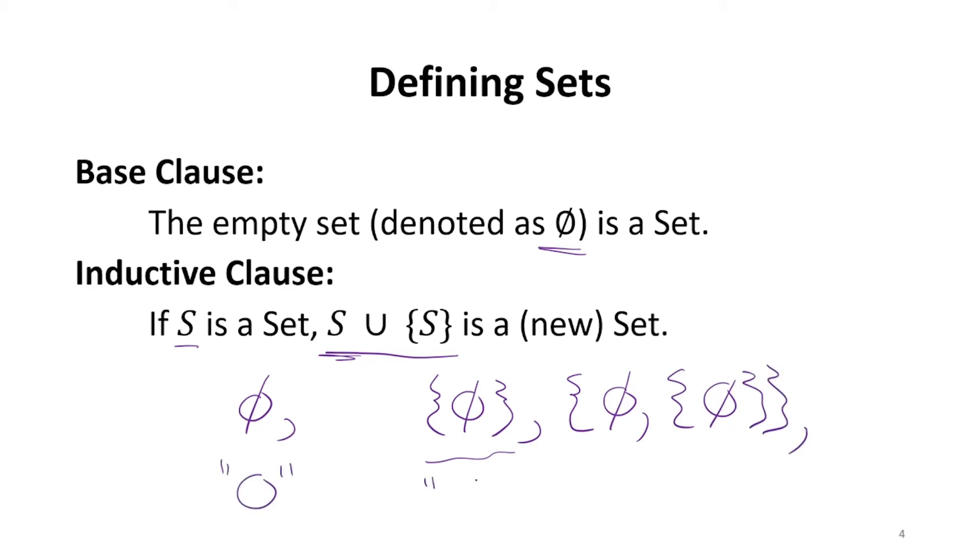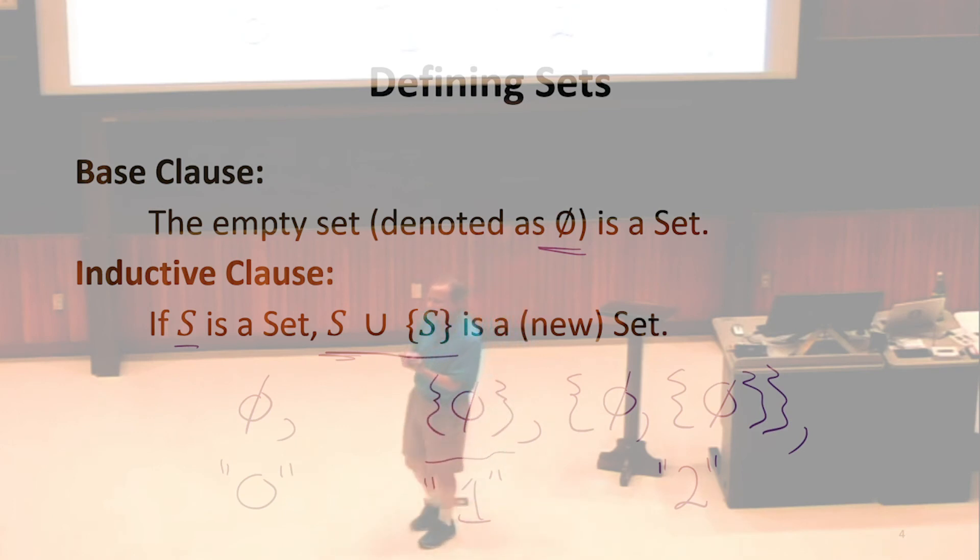We can think of this as 0, this as 1, this as 2. Are we convinced we can build up something that represents the natural numbers this way? Yeah. Is this definition limited to the cardinality of the natural numbers? This is kind of the fundamental question we're going to get at most of the class, so maybe I don't want to try to answer it now.